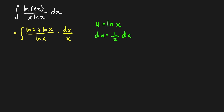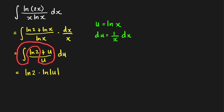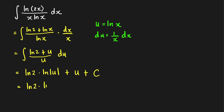By making this substitution, we get the integral of (ln(2) + u) over u, du. This is just the integral of a constant over u plus 1, which equals ln(2)·ln|u| plus u plus C. Putting u back in terms of x, we get ln(2)·ln|ln(x)| + ln(x) + C.